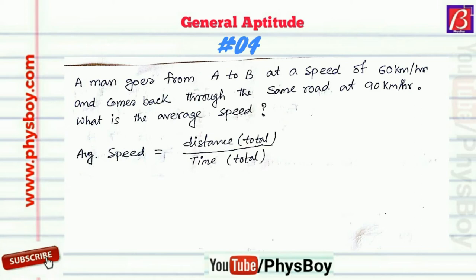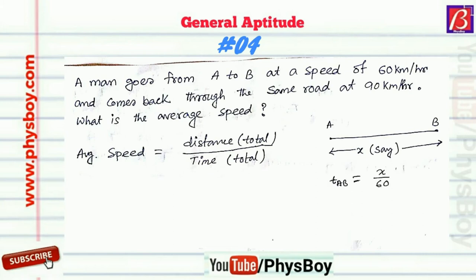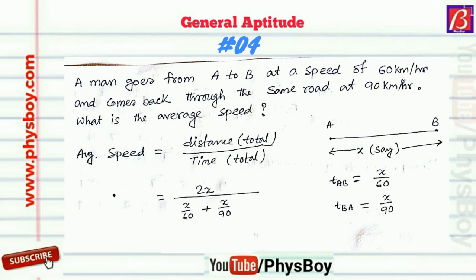Let us consider the distance between A to B is X kilometers. The time taken to travel A to B at a speed of 60 km/h is T_AB, so T_AB equals X divided by 60. Similarly, the time taken to travel B to A at 90 km/h equals X divided by 90. Total distance is X plus X, which is 2X, and total time is X/60 plus X/90.